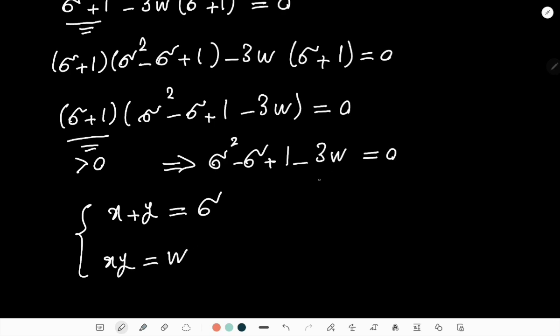And then xy was w, right? And if I look at this equation here I can find w based on σ. I can find w based on σ and this is basically equal to 1/3(σ² - σ + 1). Do you agree? Okay now I have x + y equal to σ and xy is equal to this term here.